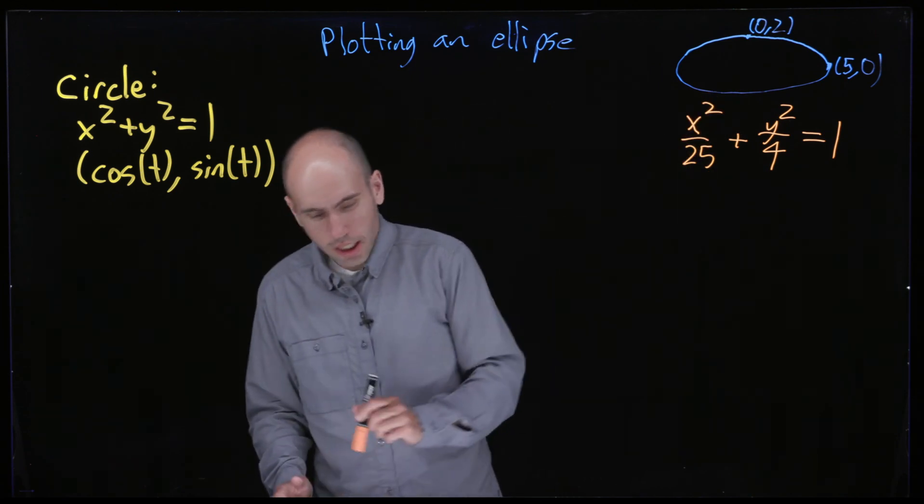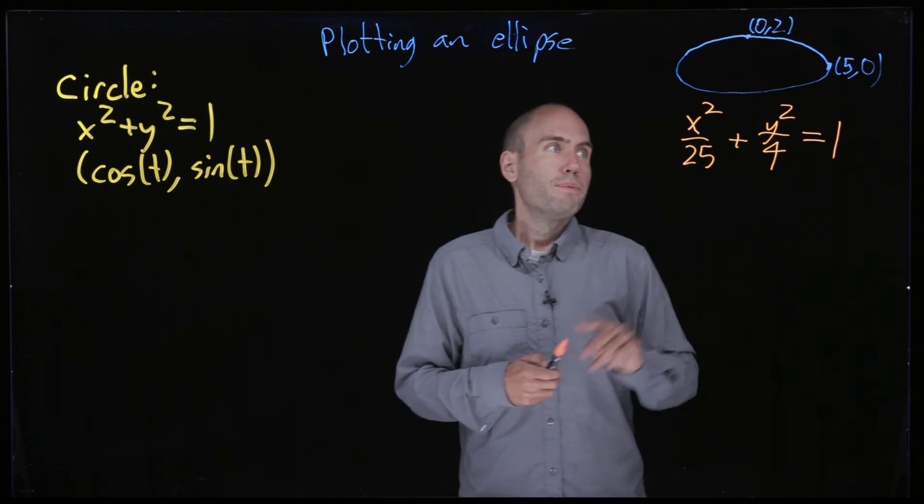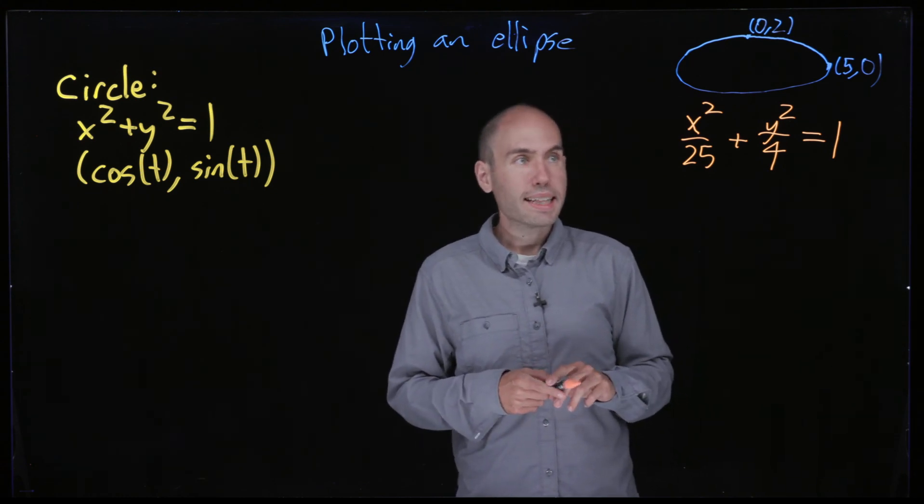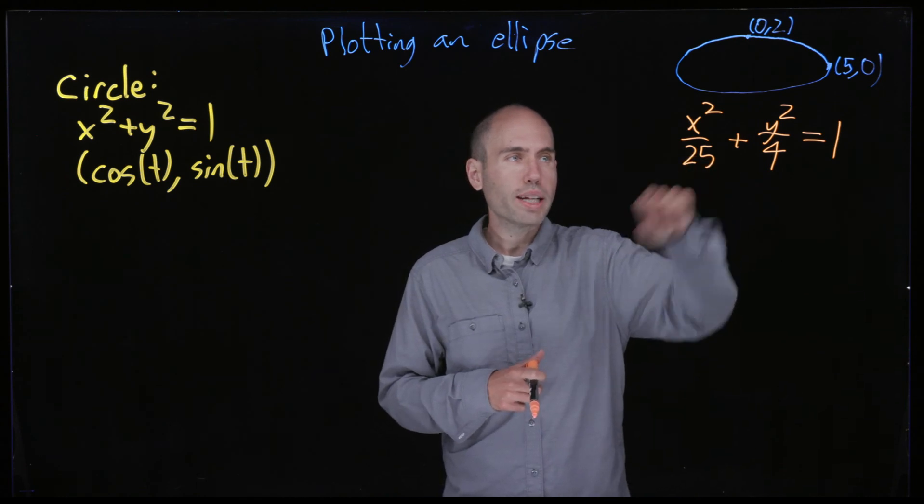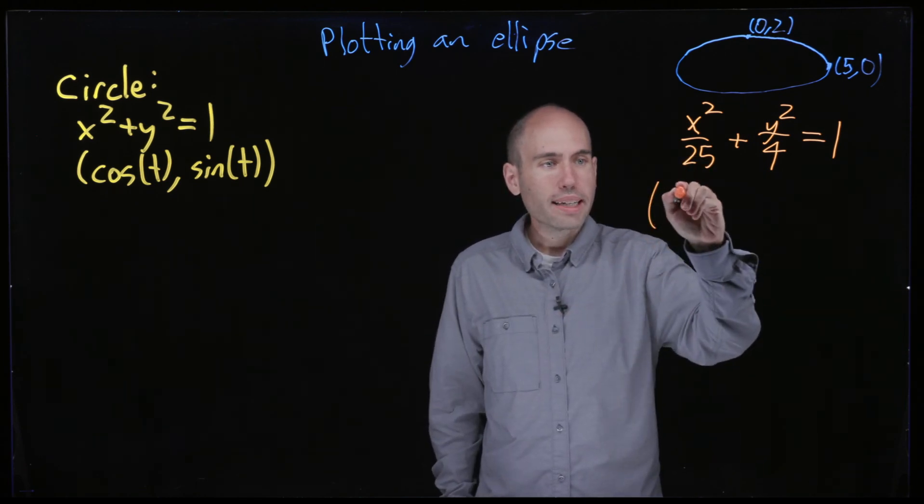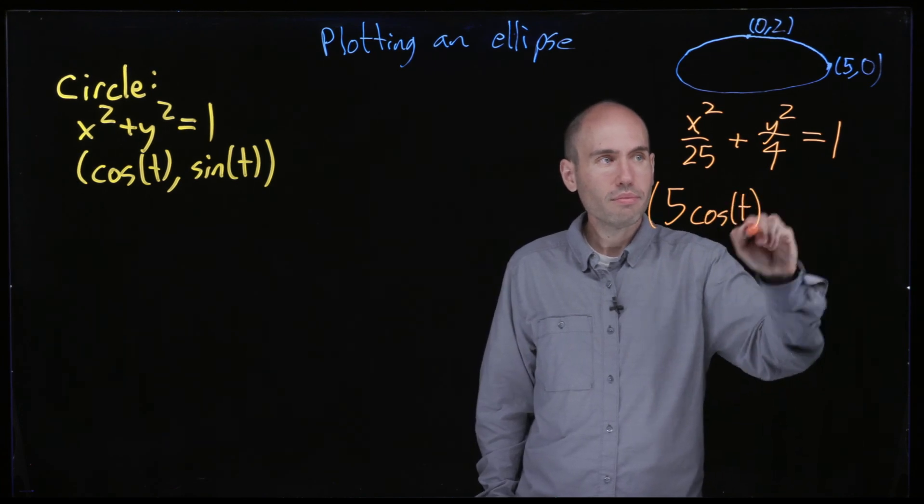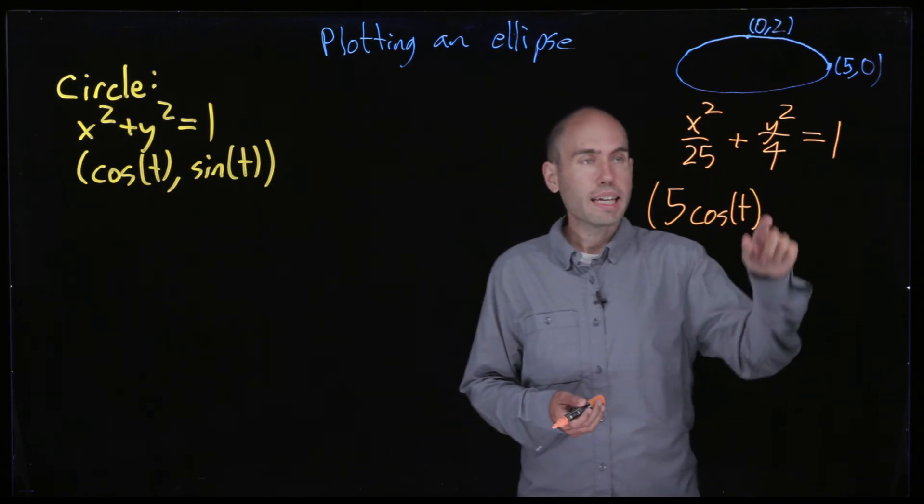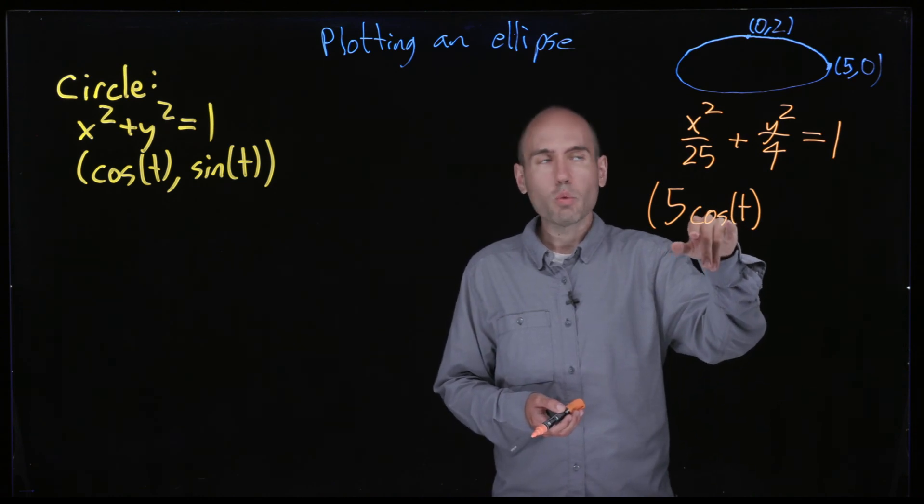What's a parametrization of the ellipse? Well there are two different ways to think about it. I want something in the numerator that cancels out with this 25, so I can use 5 cosine t. Or another way to think about it is what's the range of cosine? It's negative 1 to 1.